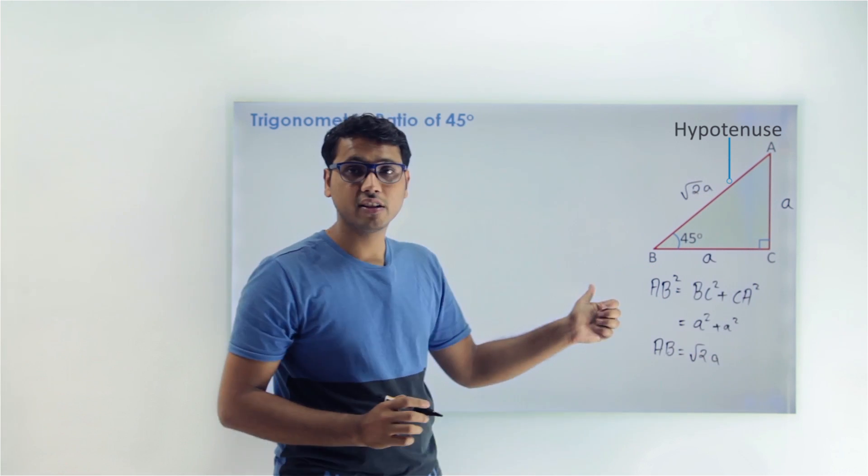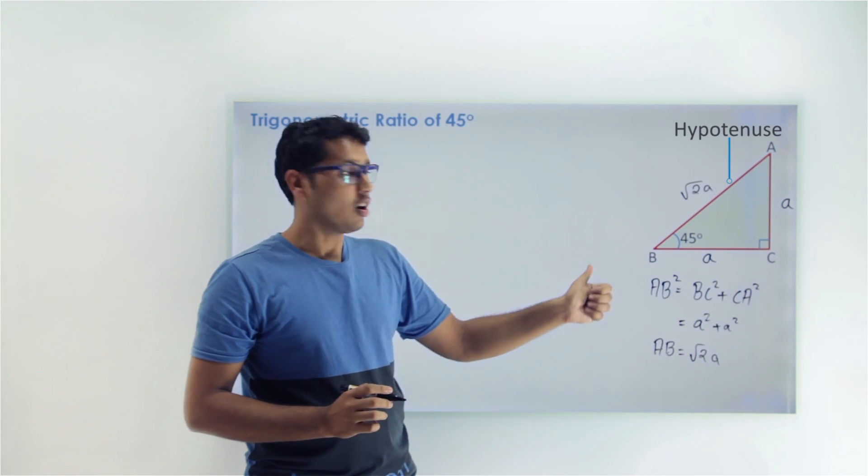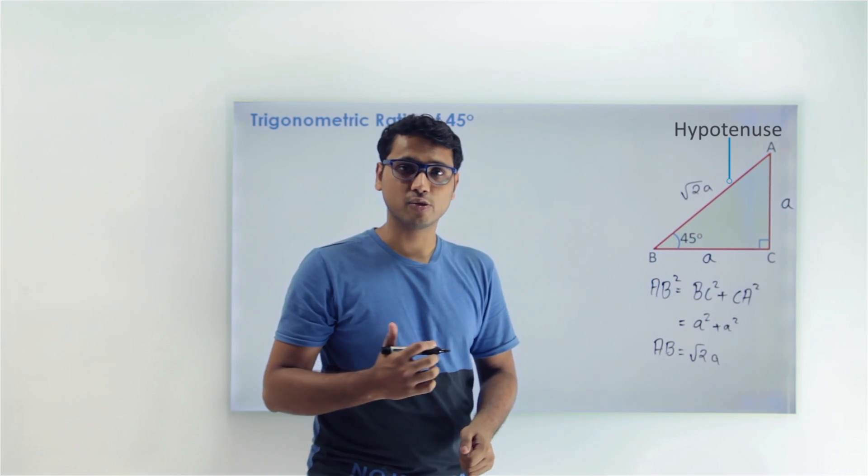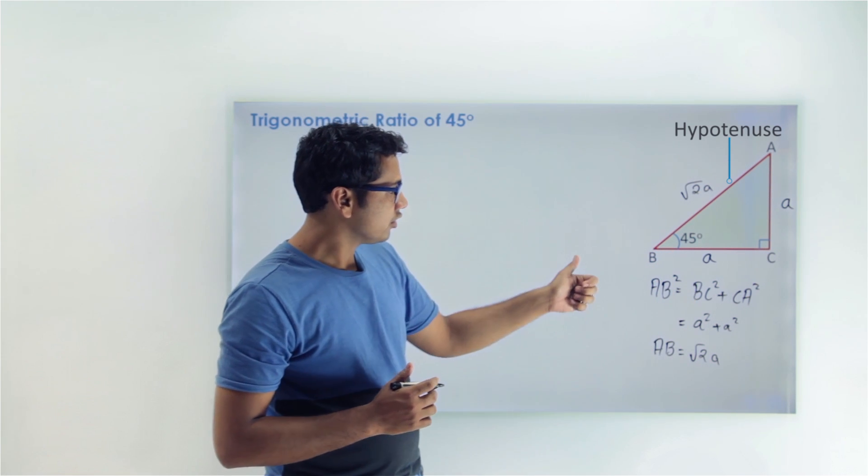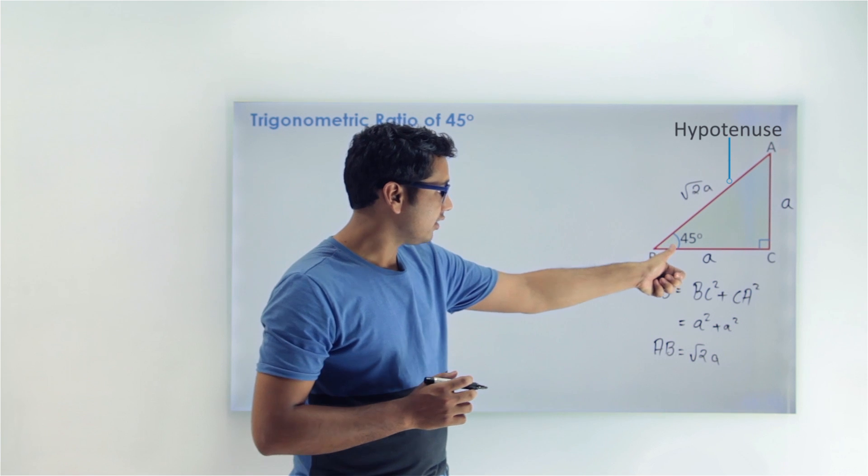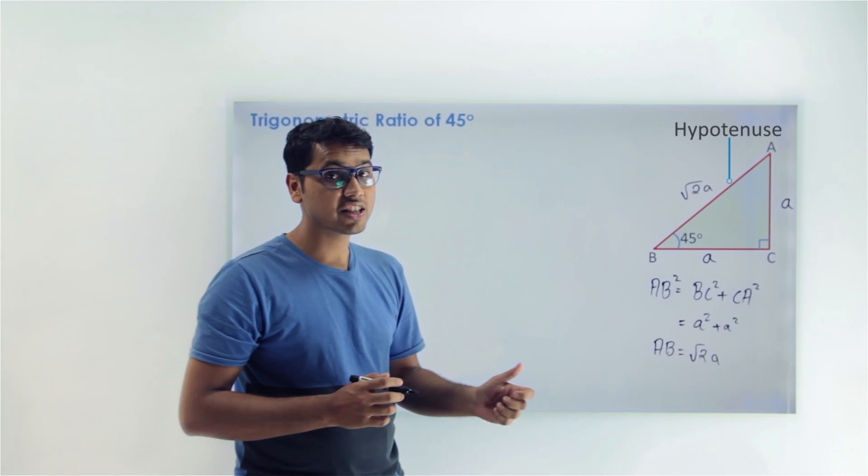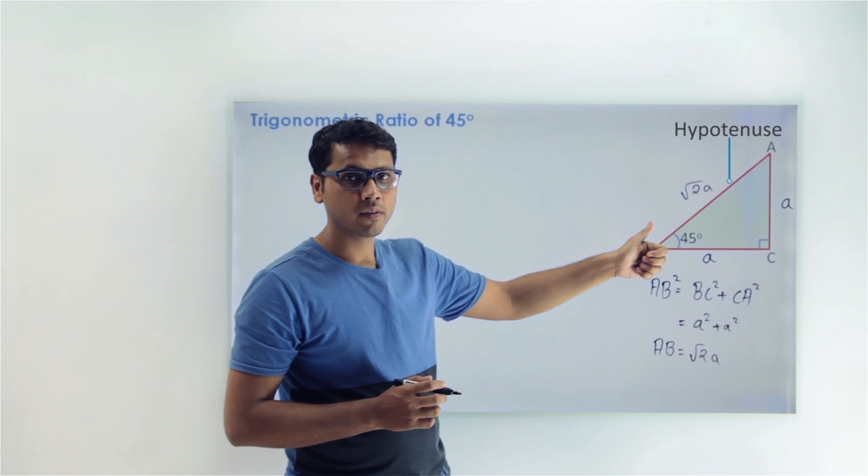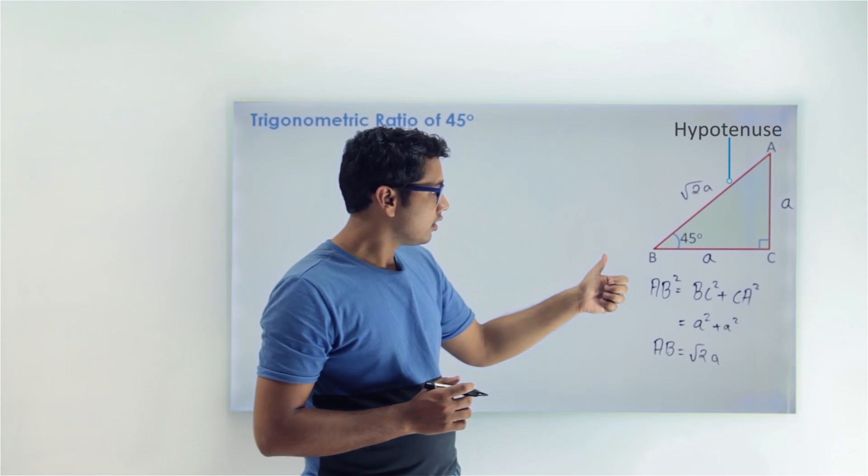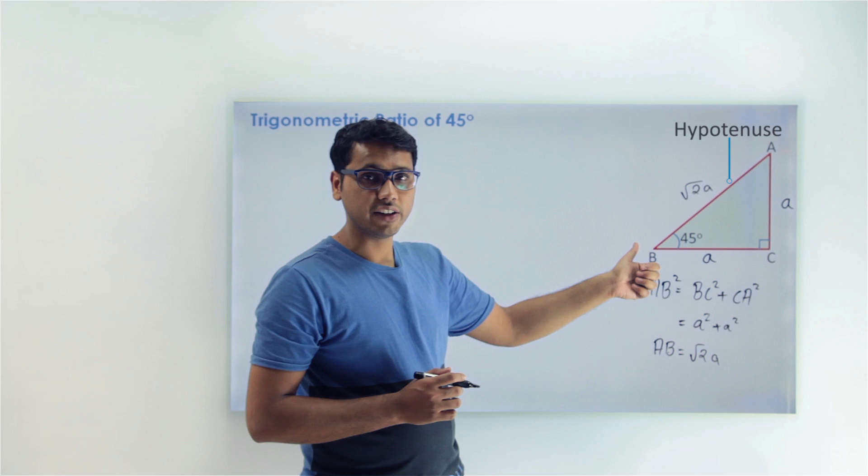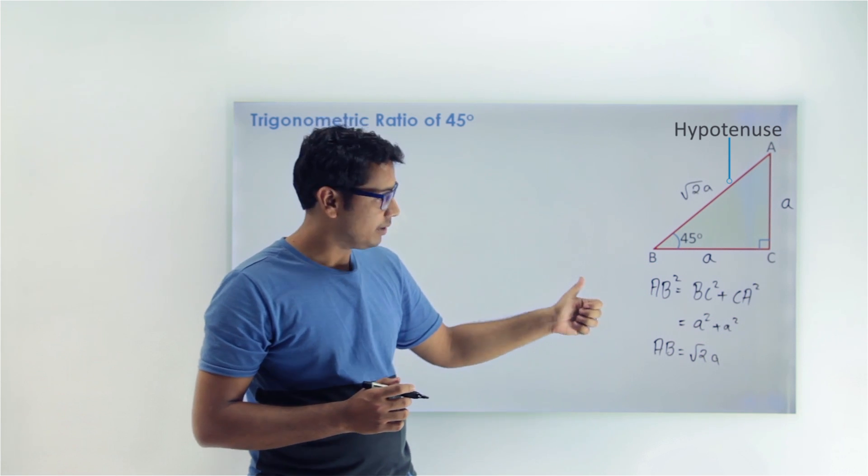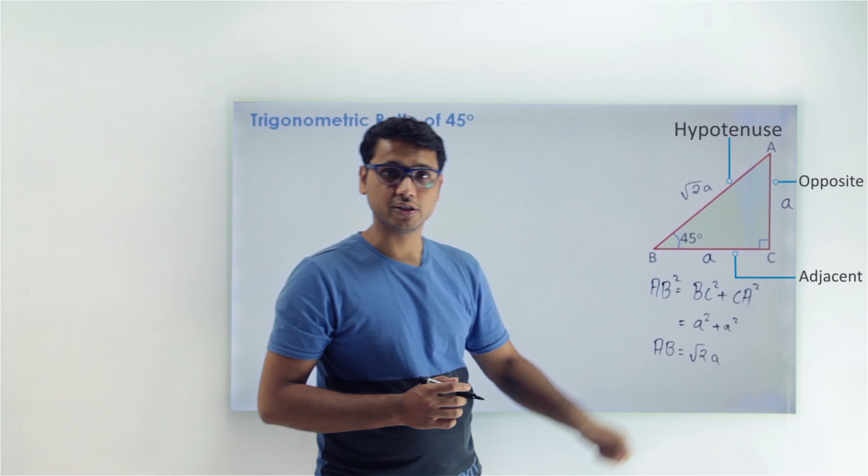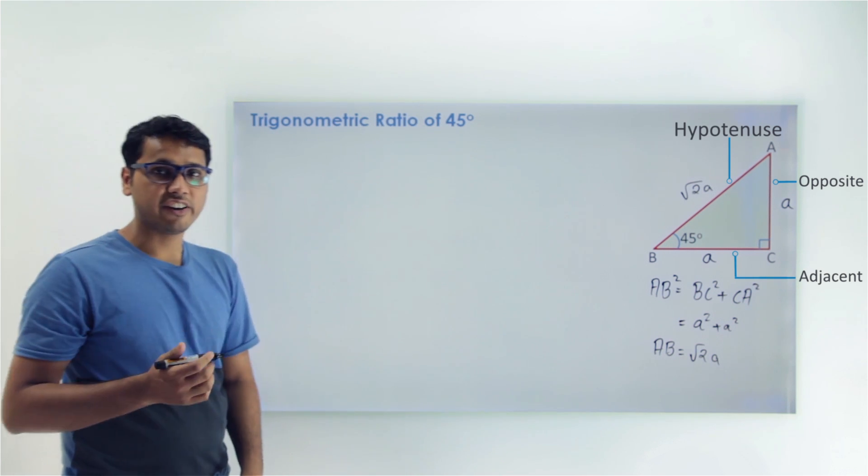Now since we have got all the values of all the sides of this right-angle triangle, we can easily find all the trigonometric ratios. Can you tell me which is adjacent and which is opposite? The side which is near to the angle given is adjacent. So BC will be our adjacent, and AC will be opposite. Now we can easily find all the values.